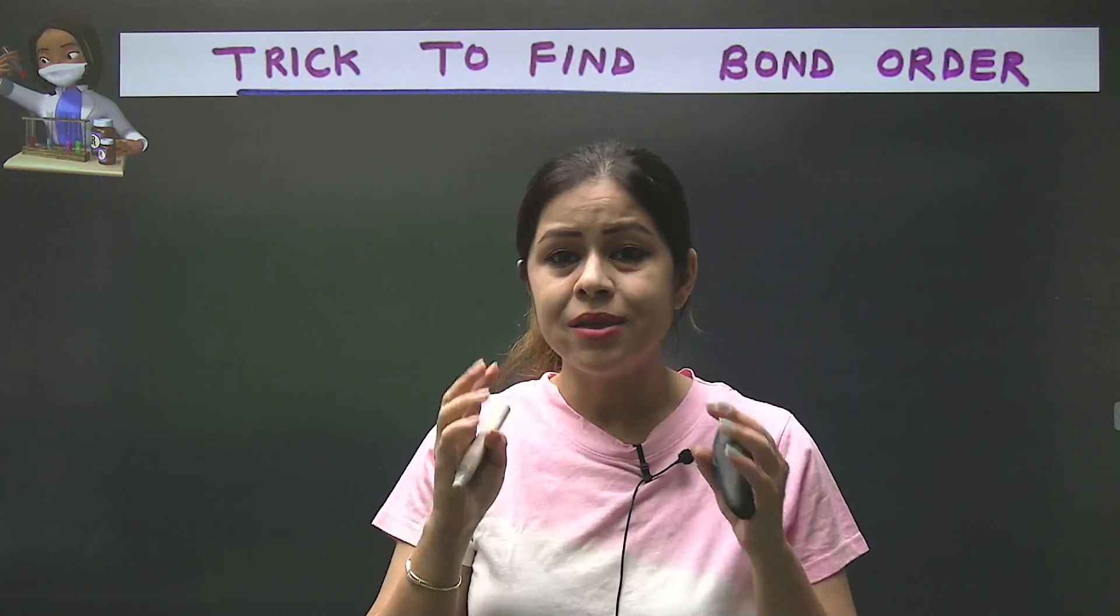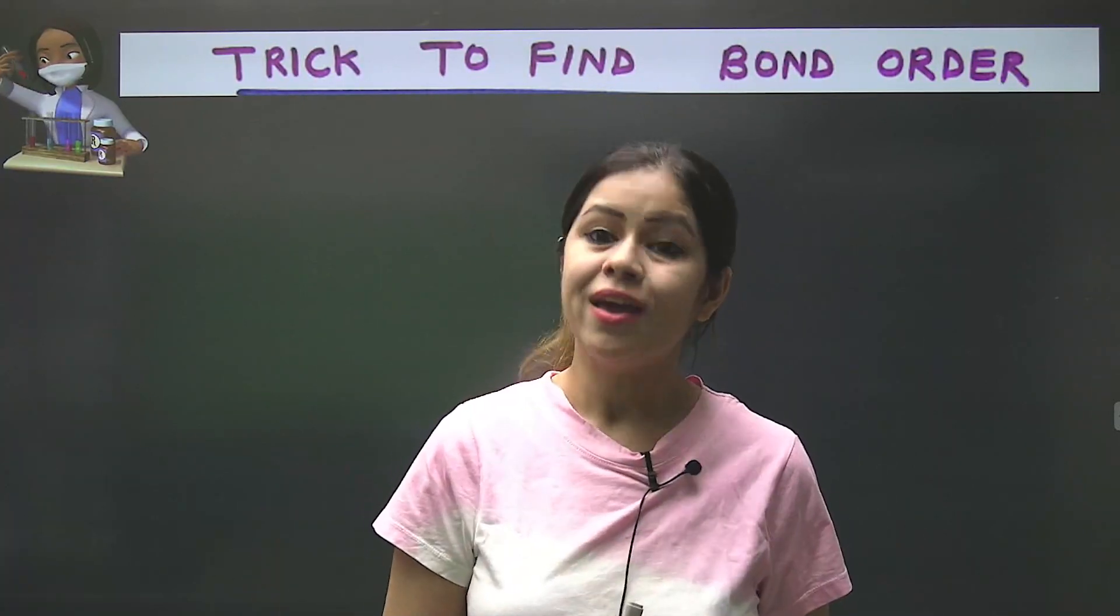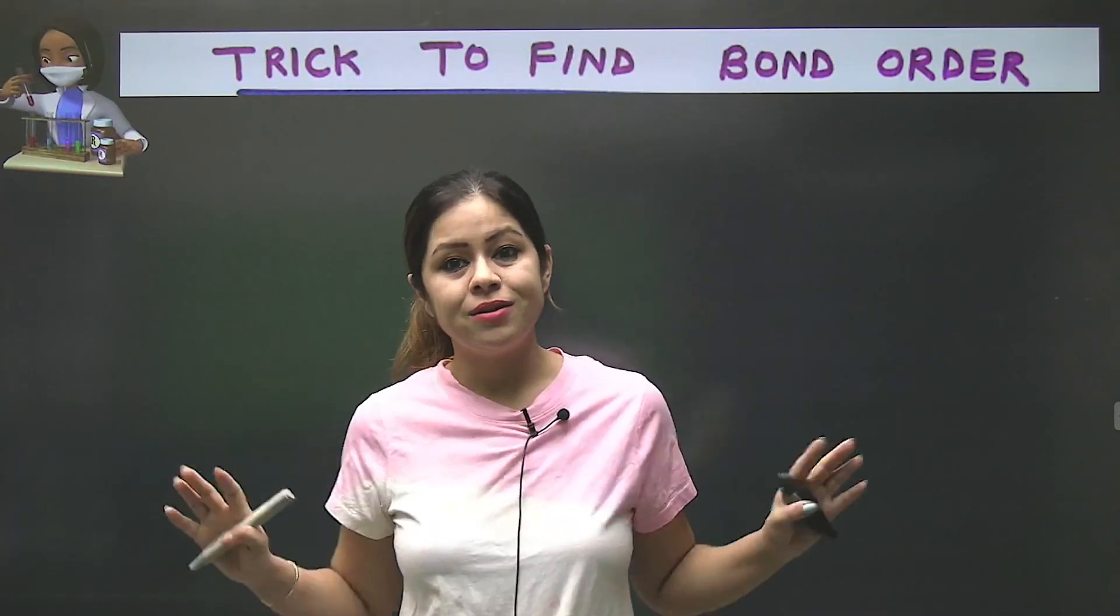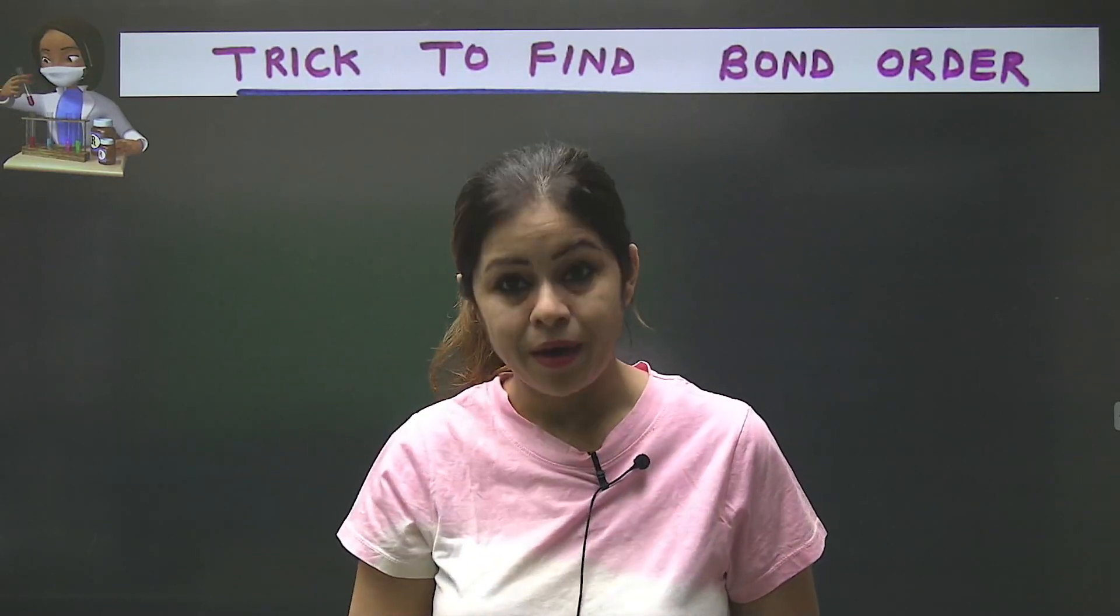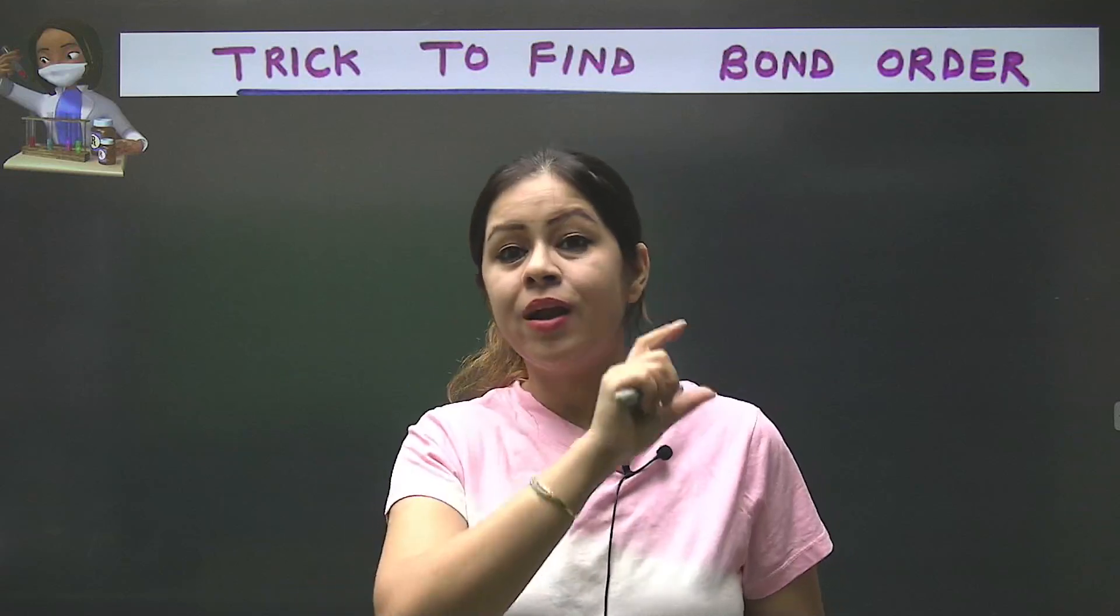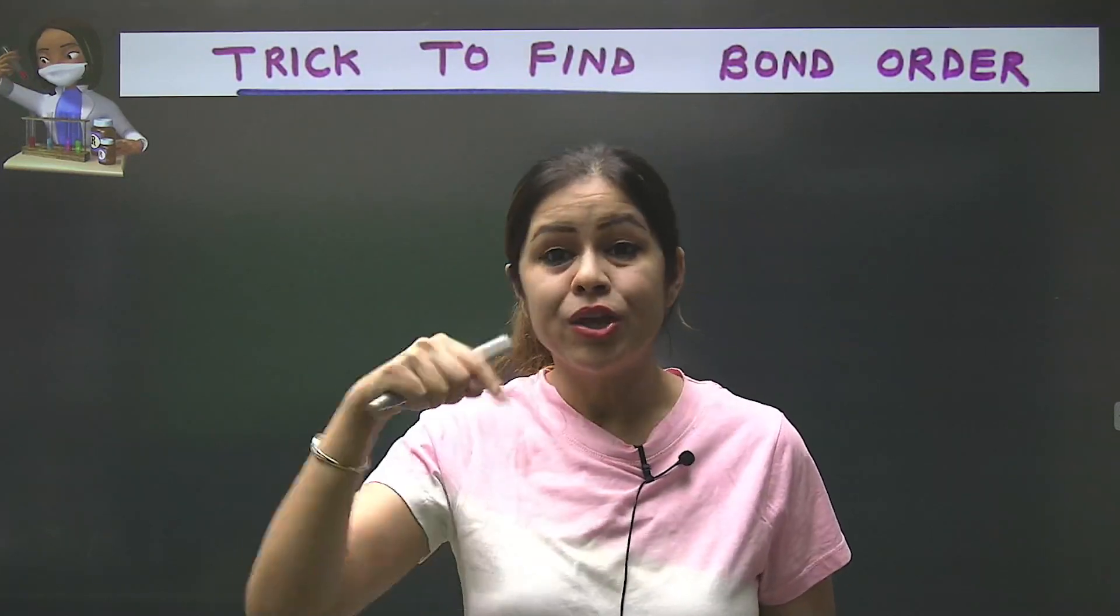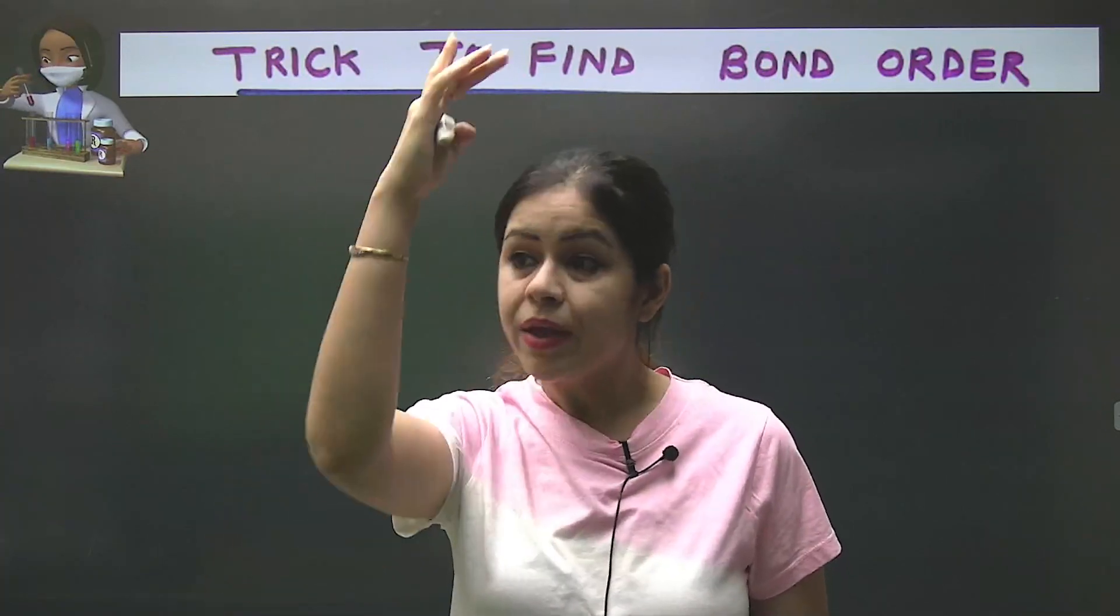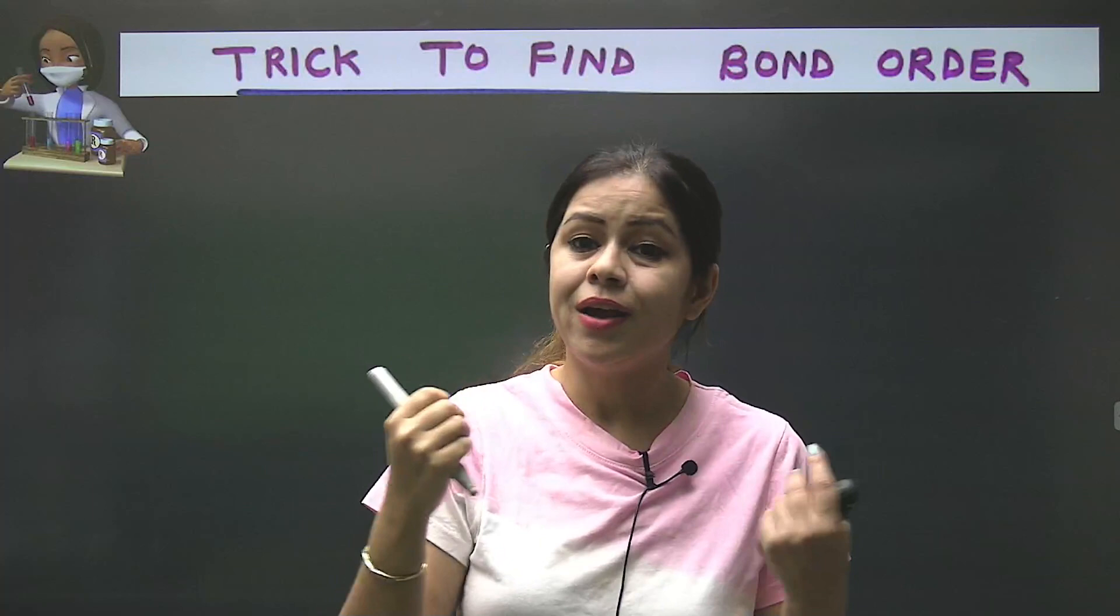So why don't we try to make these questions easier? Because otherwise, if you do it with conventional methods, it will take a lot of time. First, you have to make a molecular orbital theory diagram, then use the formula of bonding electrons minus anti-bonding electrons divided by 2, then count bonding electrons through that diagram, put it in the formula, and then get the answer. This takes a lot of time.